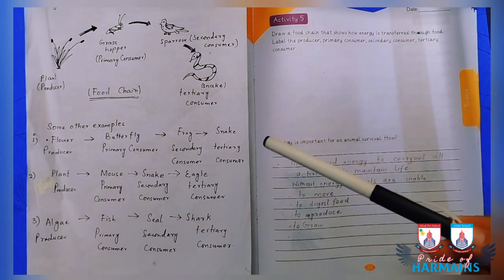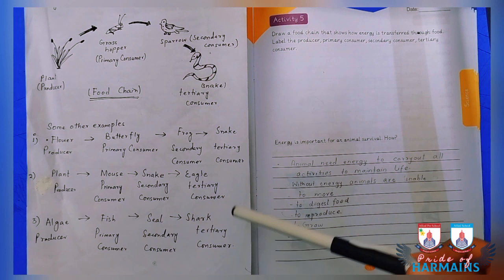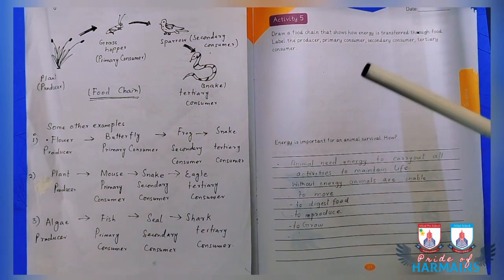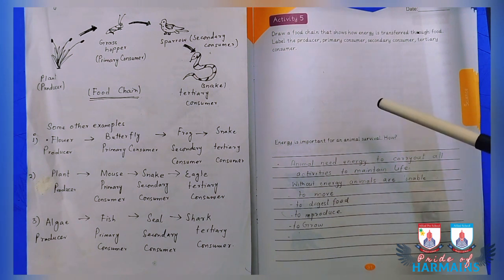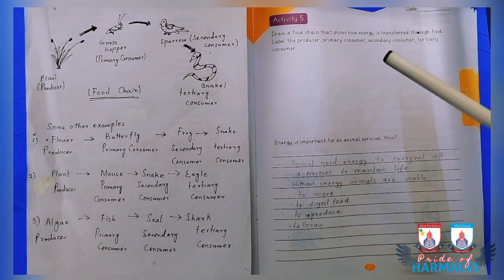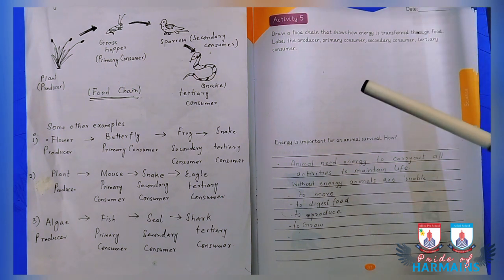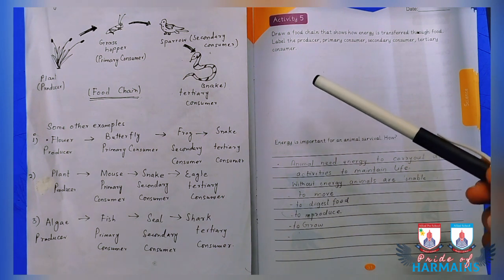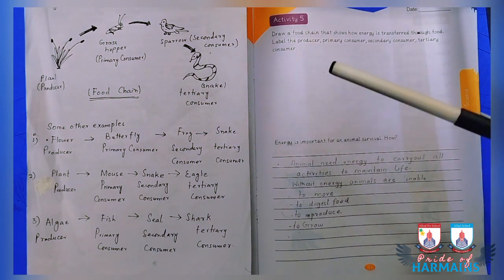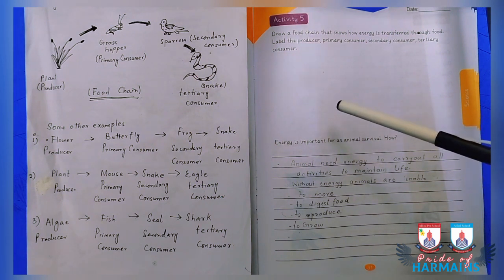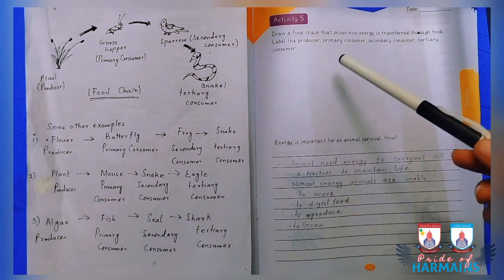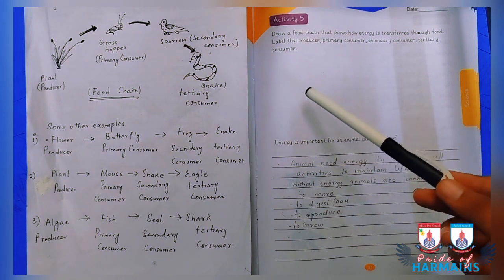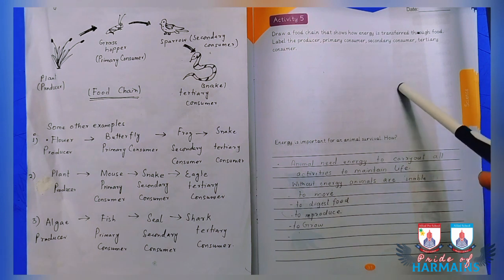After that, you are going to take any example and draw a simple food chain in the given space. First of all, what is a food chain? A food chain is a chain in which energy is transferred through food among different organisms. Producers are organisms capable of making their own food. Primary consumers feed upon the producers to obtain food.